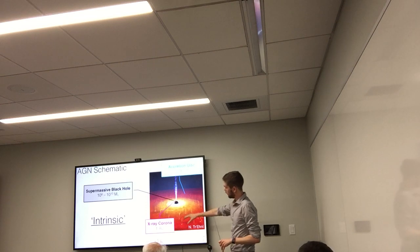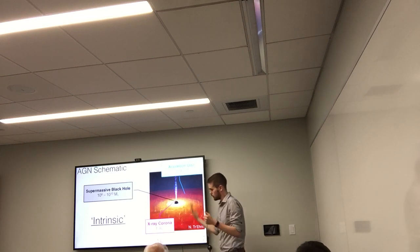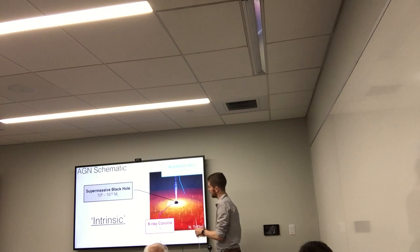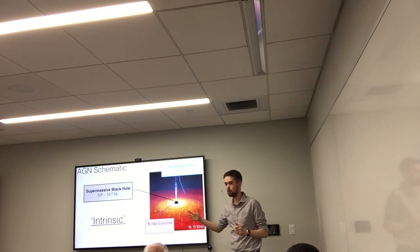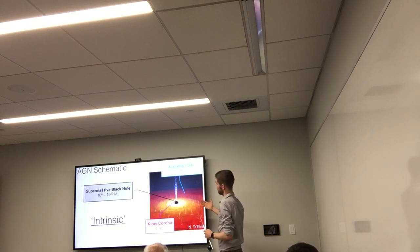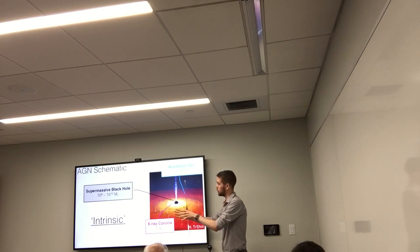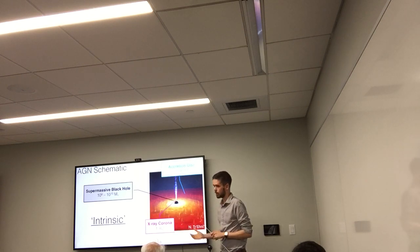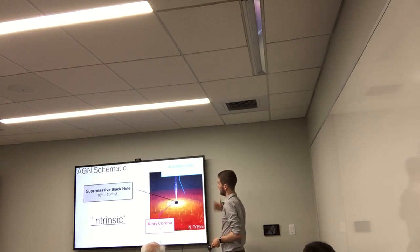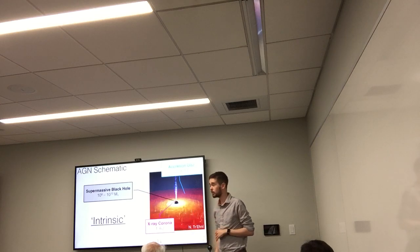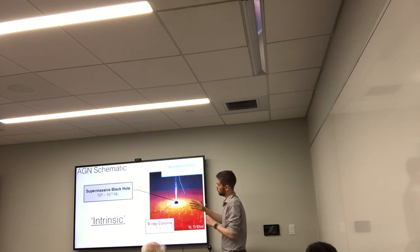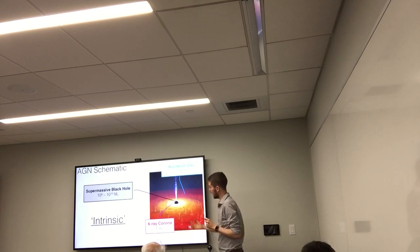The X-ray corona is an assumed-to-exist gas of electrons that takes the UV and optical photons emitted from the accretion disk and Compton scatters them — taking UV energies and pushing them up to X-ray energies. That is your intrinsic X-ray source. Although it's technically a secondary source of emission, taking UV photons and scattering them into X-ray energies, it is, for the purposes of this talk, the intrinsic X-ray source. As you can see, it's very, very close to the central supermassive black hole.